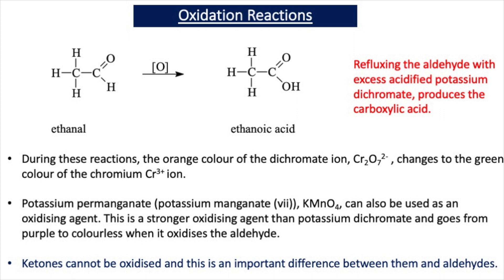An alternative to using acidified potassium dichromate is to use acidified potassium permanganate, potassium manganate(VII), KMnO4. This is a much more powerful oxidizing agent, but it will still convert an aldehyde to a carboxylic acid. Very often the milder potassium dichromate is preferred. The color change for potassium permanganate when it oxidizes a substance is that it goes from purple to colorless.